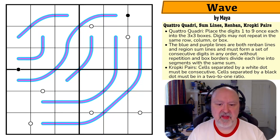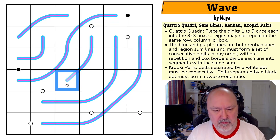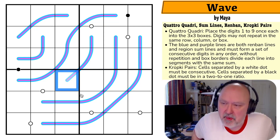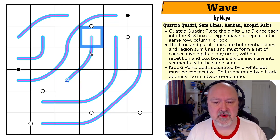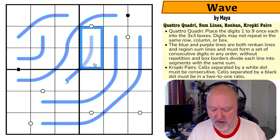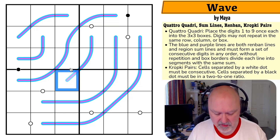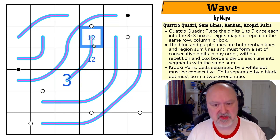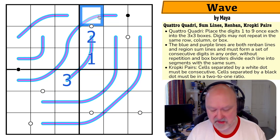I think this is where I want to start. Those two digits, which have to be consecutive with that one, have to sum to that digit. It's the sum of at least two digits, so it's at least three. But if this is four, these would have to be consecutive with four and lower than four - minimum three and two - which sums higher than four. So this has to be a three, and these have to be one and two. If this is a one, then this is a two, and this has to be consecutive with two and can't be one, so this is a three.